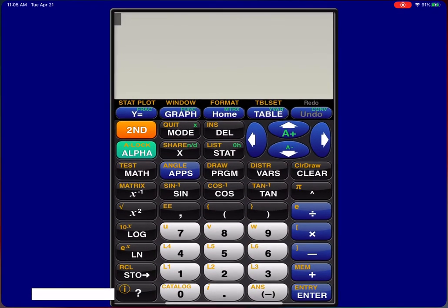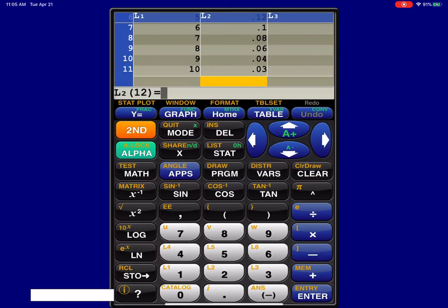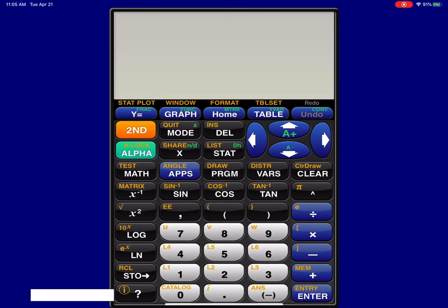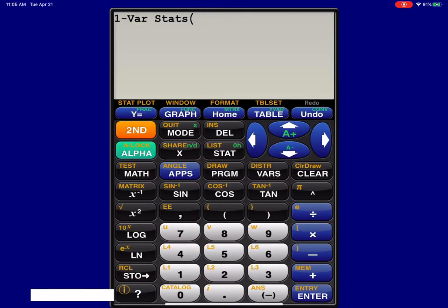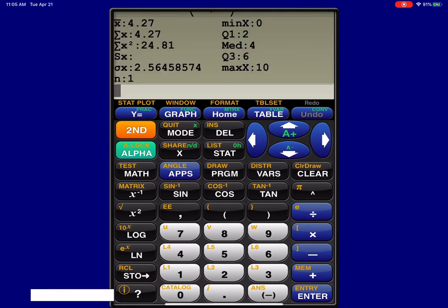Let me head over to my calculator. I put my data into my list, so you can see it there. I'm going to do 1var stats L1, L2. Let's see what we're getting. It looks like the mean is 4.27, the standard deviation is about 2.56, and the median is over there at 4.